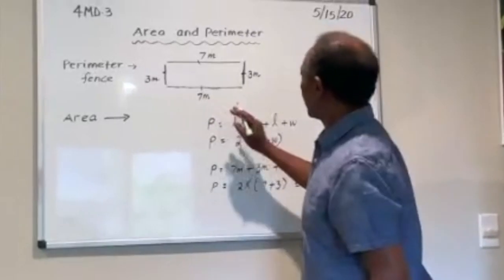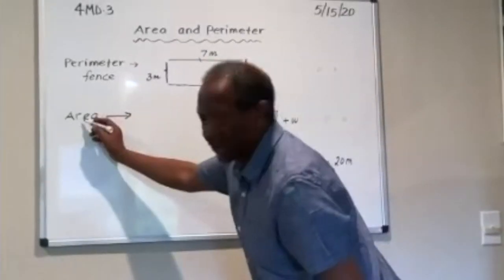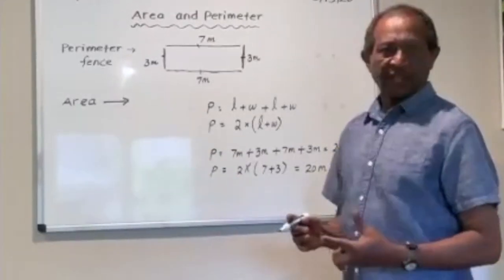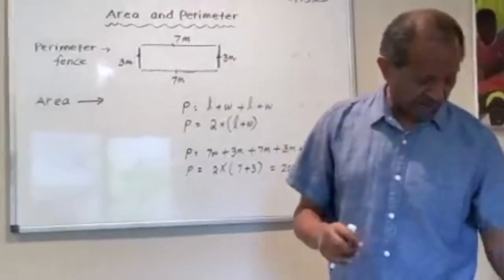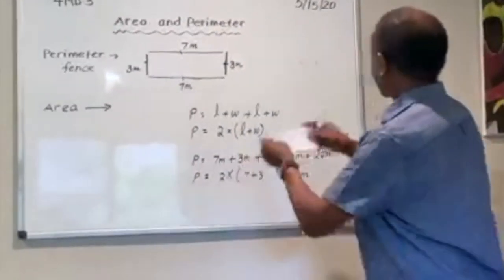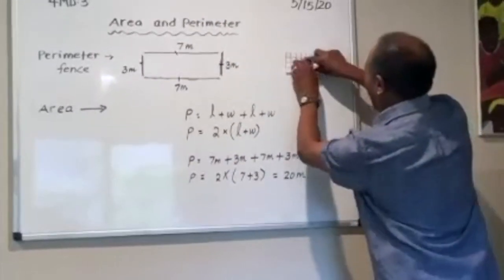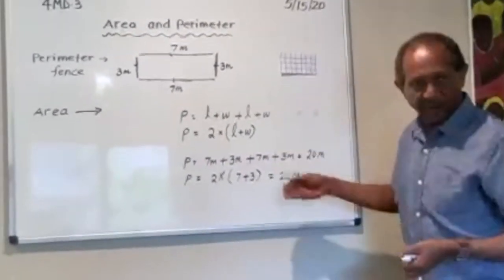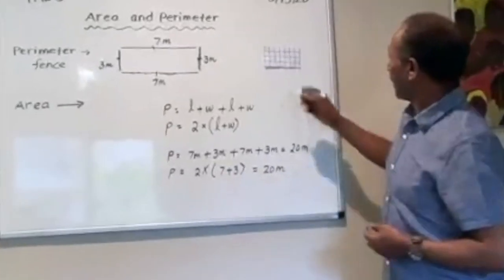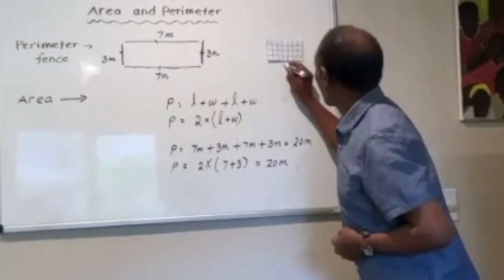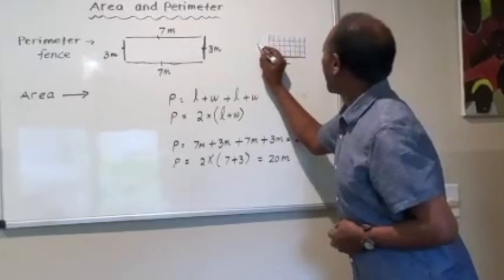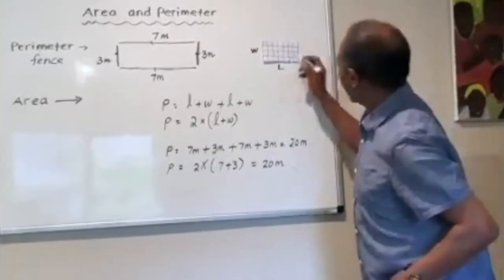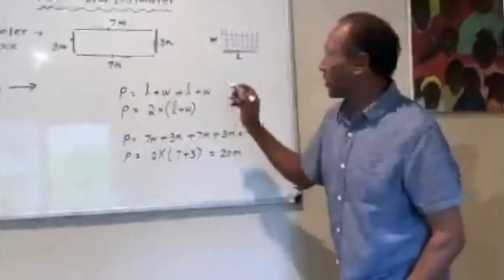Now let's learn about area. Area is the inside part. If you remember in third grade, we cut rectangles into arrays and multiply the length, which is here, and the width, which is here. So the length — let's count the squares: seven units.